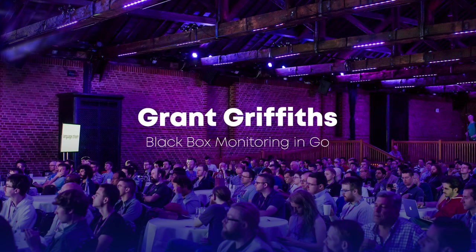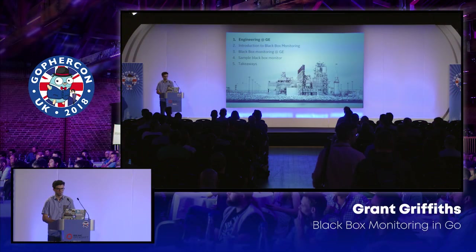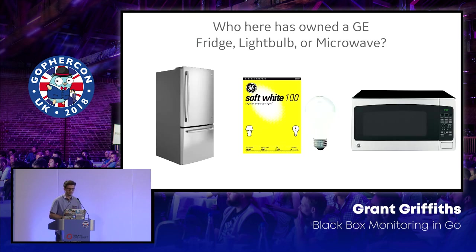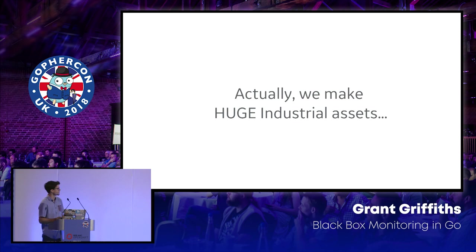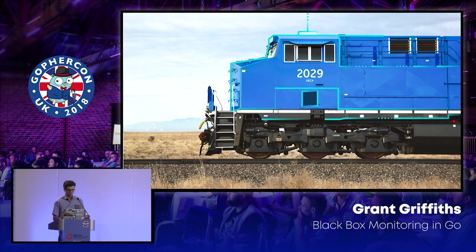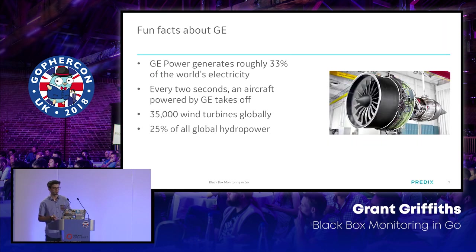The kind of problems we are working on — just to give you a little perspective into why we do this black box monitoring. Who here has owned a GE fridge, light bulb, or microwave? People think of GE as building microwaves and fridges, but we actually build huge industrial assets: jet engines, wind turbines, trains. All of these assets have a ton of data that needs to be ingested into our platform so analytics can be done on top of it.